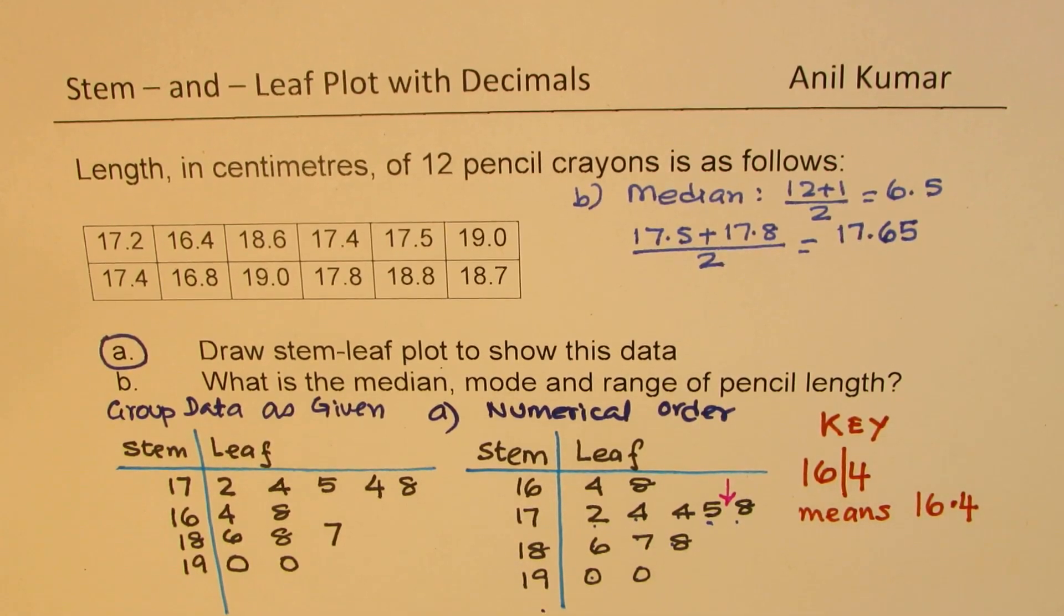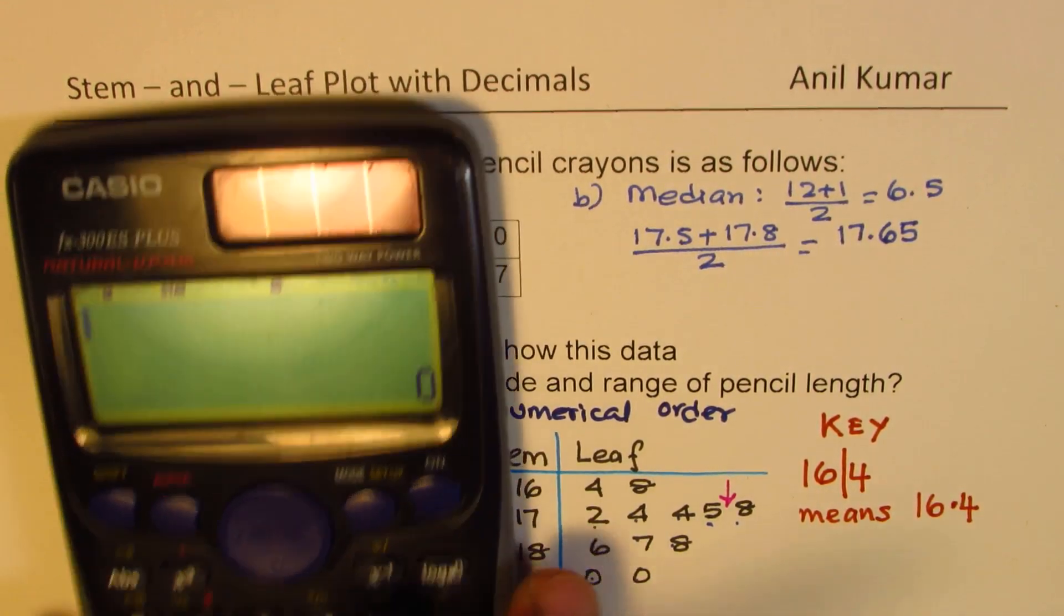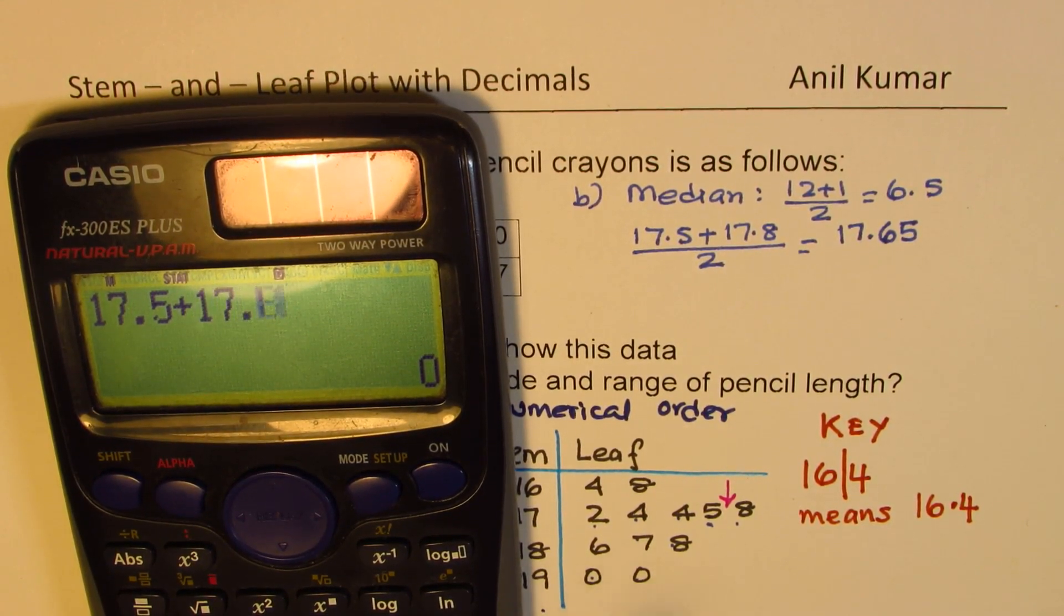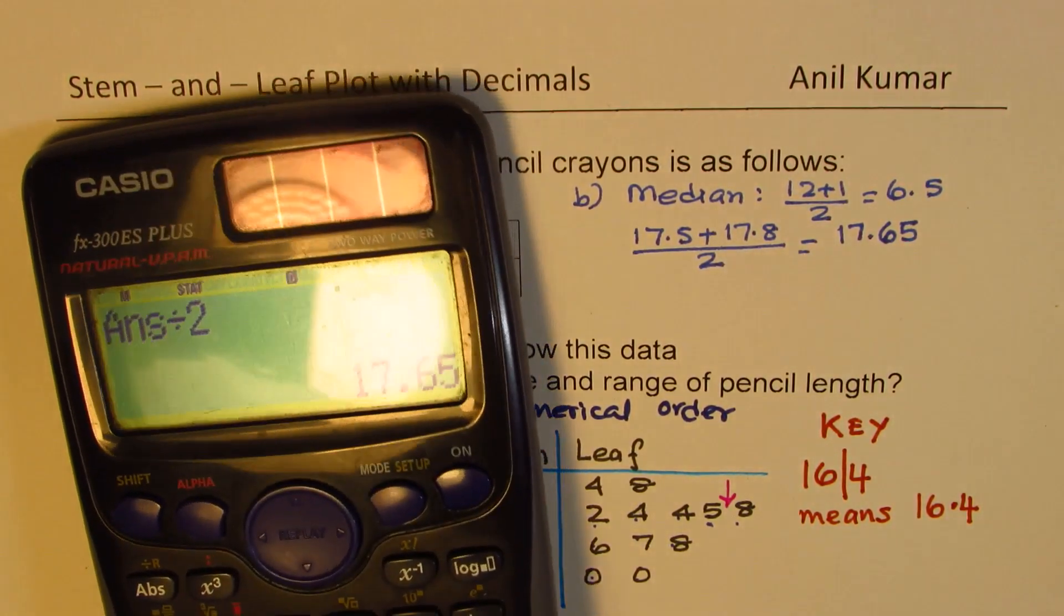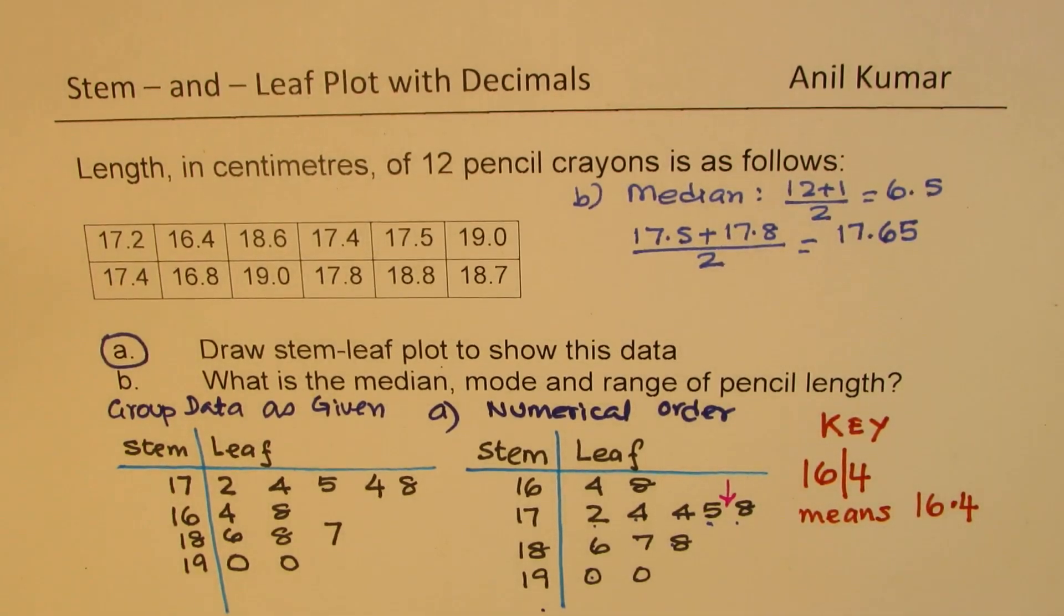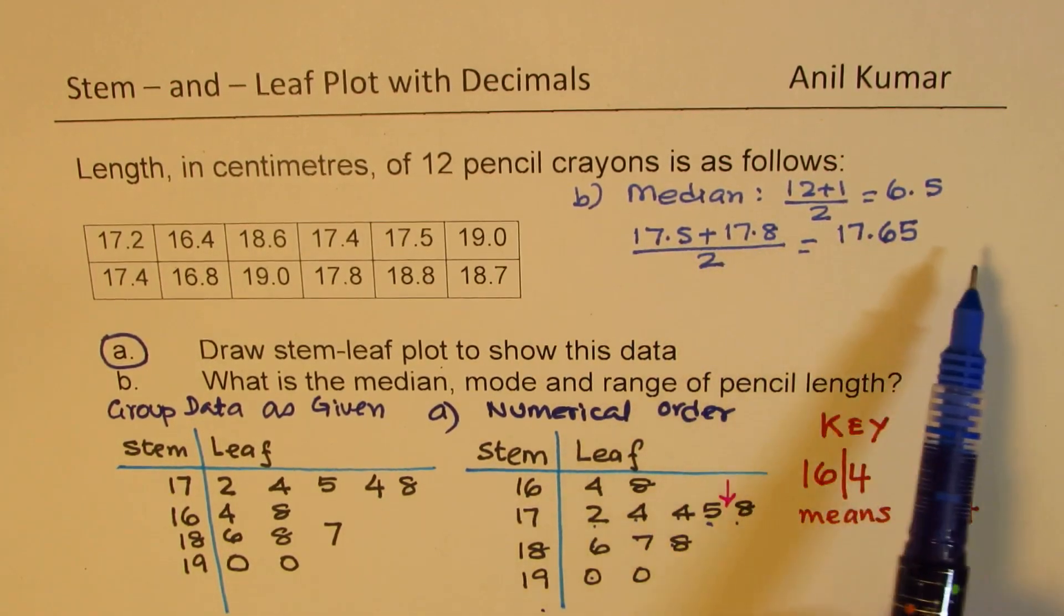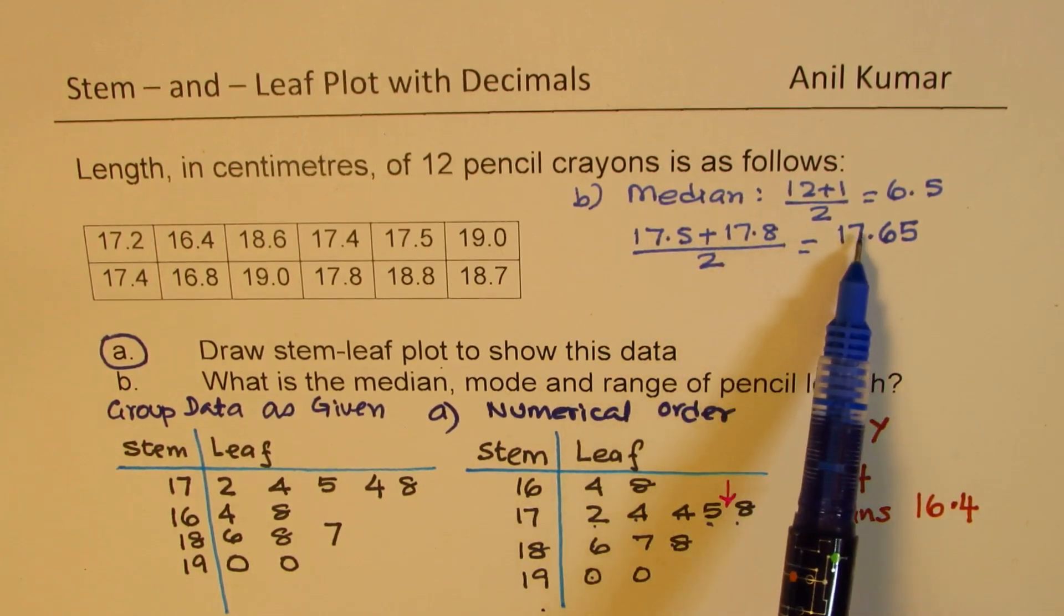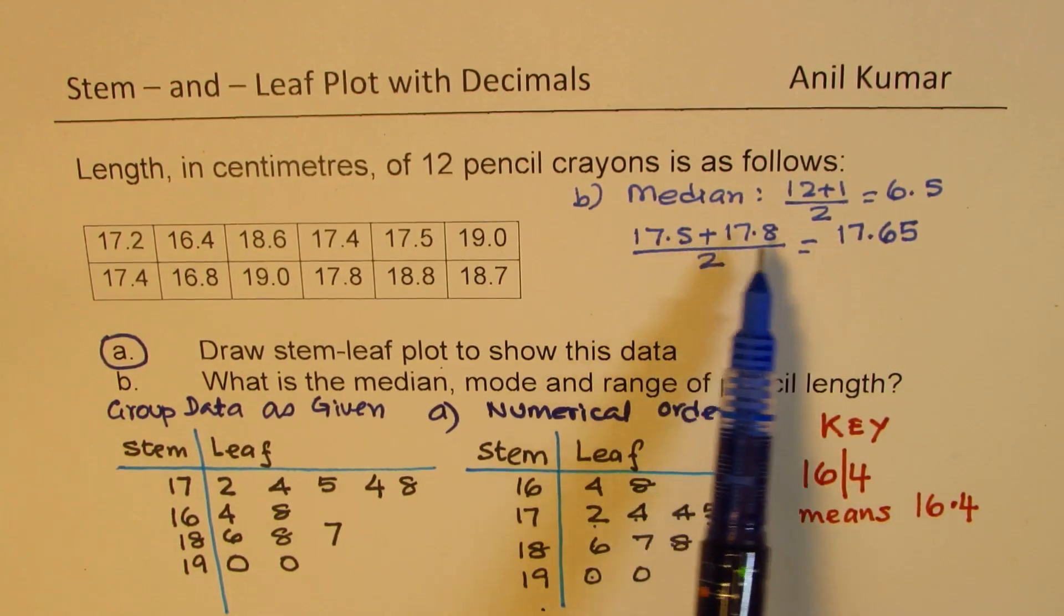So the middle value. So sometimes when the calculator is allowed you can always add 17.5 and 17.8 and then divide by 2 to get your answer which will be 17.65. Otherwise easy ways just add them and then do. Now since 17 was common, so we just wrote 17 and we worked on the decimal place slightly faster.